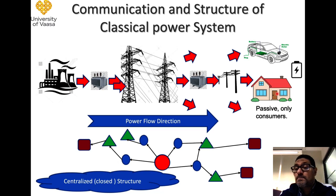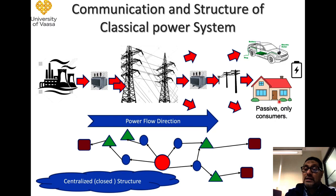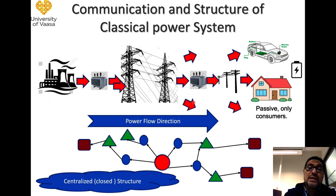On the consumer side, most consumers are passive — they are only consuming power. We have, for example, nowadays electrical cars, small conventional customers, as well as big customers like factories. So it is a centralized and closed power system.